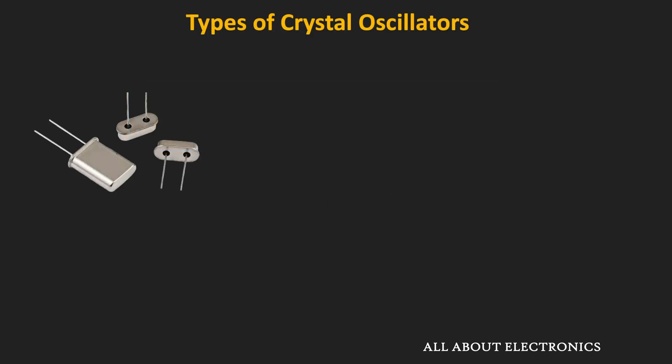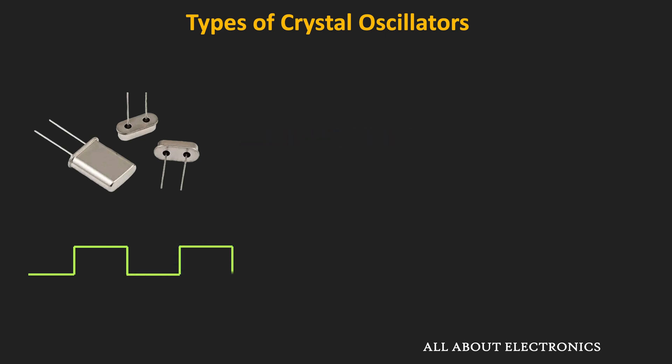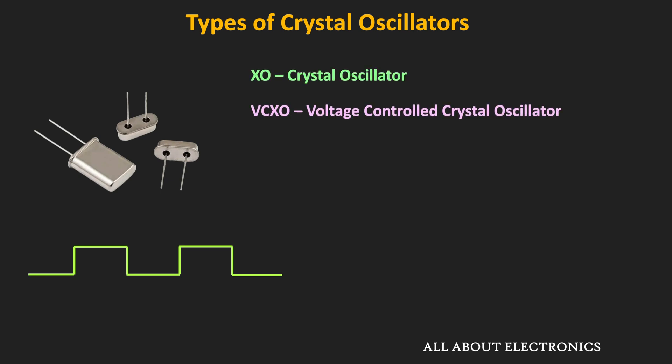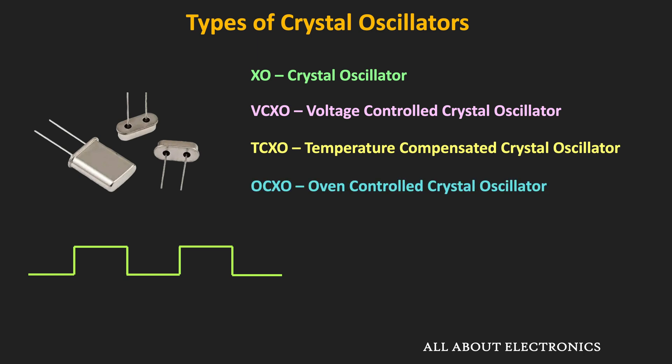Crystal oscillators use the piezoelectric effect of the quartz crystal to generate a precise electrical signal of a particular frequency. Depending on the required tunability, temperature stability, and aging rate, different types of crystal oscillators are used in various applications. These are the four different types used commercially, so first let us understand why such different crystal oscillators exist.